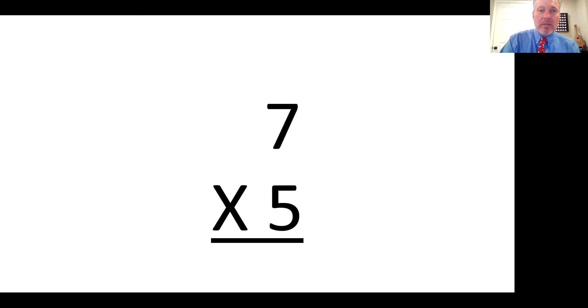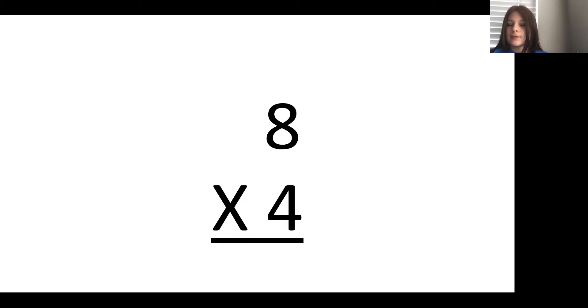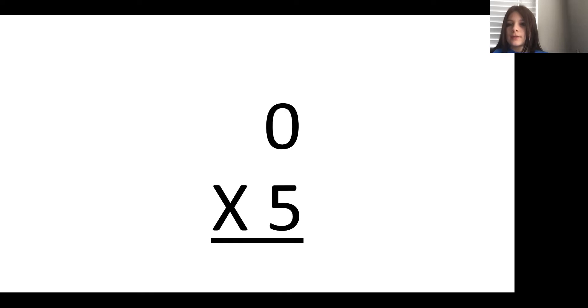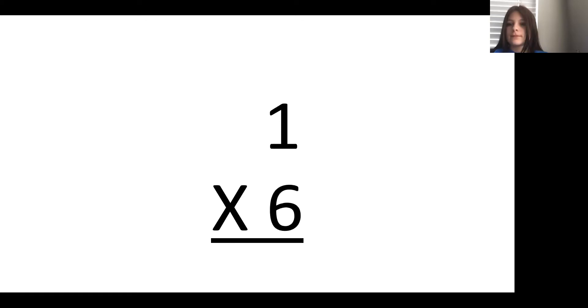One more time. This one? 7 times 5 is 35. Good. This one? 7 times 5 is 35. 8 times 4 is 32. Good. Keep going. 7 times 5 — just say the answer. 0. Good. 3. Good. 6. 8. 3 — I mean 6. Good. 6. 0. Good.